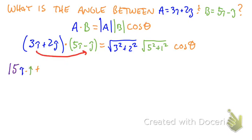Then we do the 3i to the negative j, so that's negative 3i dot j. Then we multiply the 2j times the 5i and that gives me 10j dot i. And then we multiply the 2j times the minus j and that gives me minus 2j dot j.